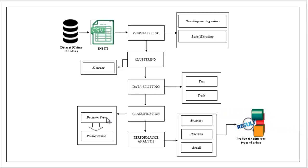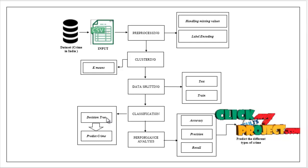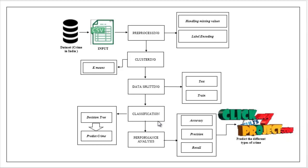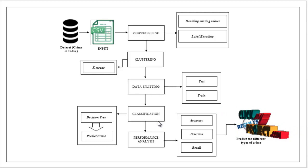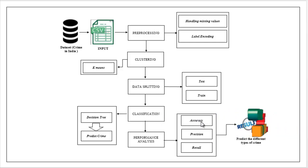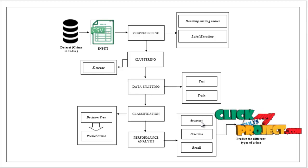With the help of the decision tree, we predict what type of crime it is — either criminal breach of trust or cheating. The classified data is then used to estimate performance using metrics like accuracy, precision, and recall. Accuracy means the overall prediction — how accurately my model predicts in terms of percentage. This is the flow of our project.